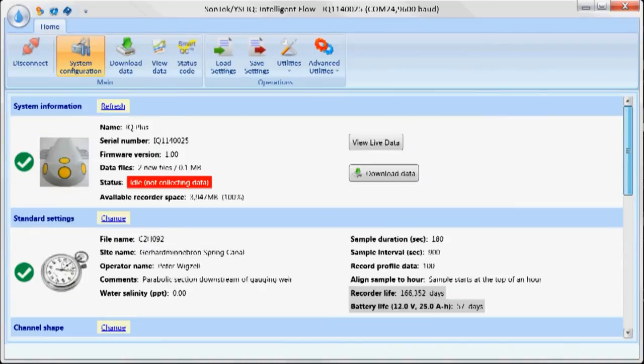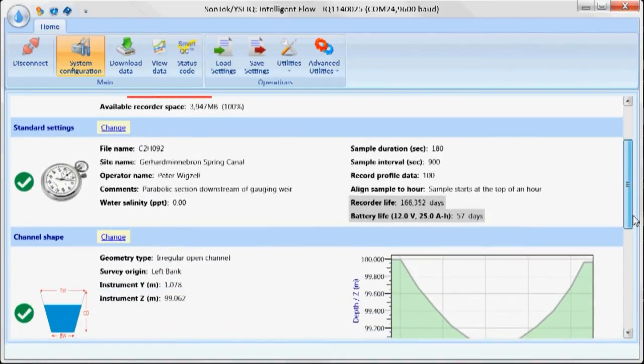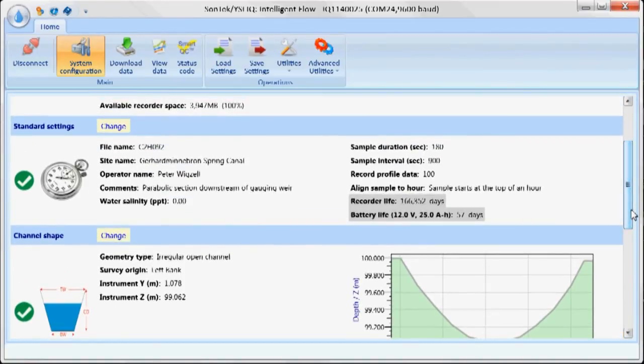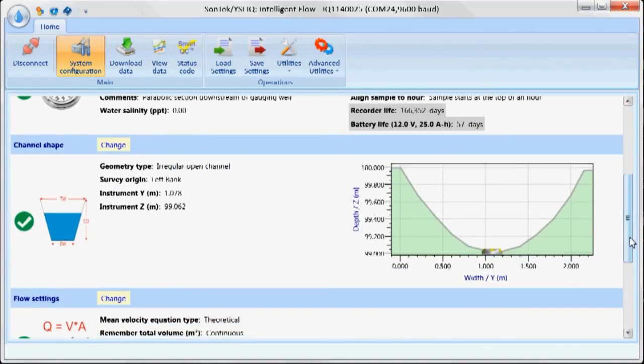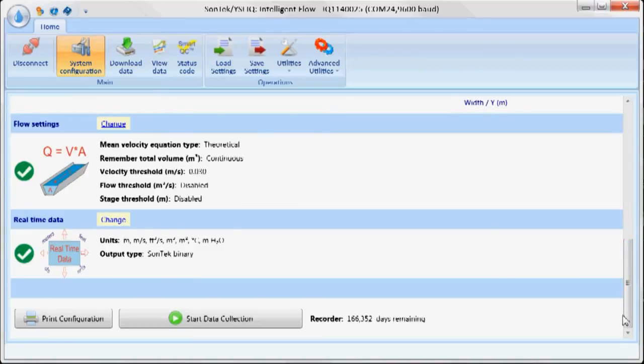When we connect to the instrument, it's going to give us the system information. For the settings, we're going to tell it the file name and the site name, the operator, where we're at. Also, we're going to set the duration of the sample and the interval. The next thing that we have to change is actually the type of channel shape that we're going to use. There's a variety of different types of channel shapes where I can input my own surveyed value. The next thing is I'm going to program the instrument about how to do the flow calculation. There's two basic calculations: one is theoretical, which in most cases you'll be using, it doesn't require a calibration, or a velocity index.